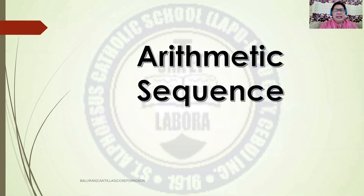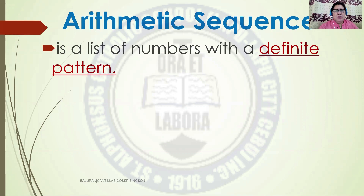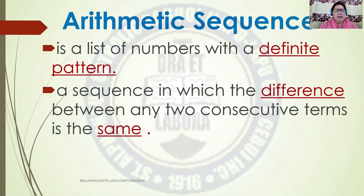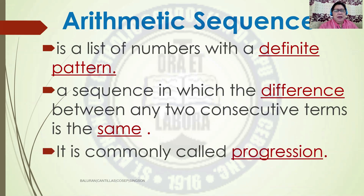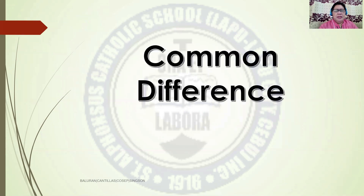Let us have now the Arithmetic Sequence. How do you define an Arithmetic Sequence? An Arithmetic Sequence is a list of numbers with a definite pattern. It is a sequence in which the difference between any two consecutive terms is the same, and it is commonly called a Progression.